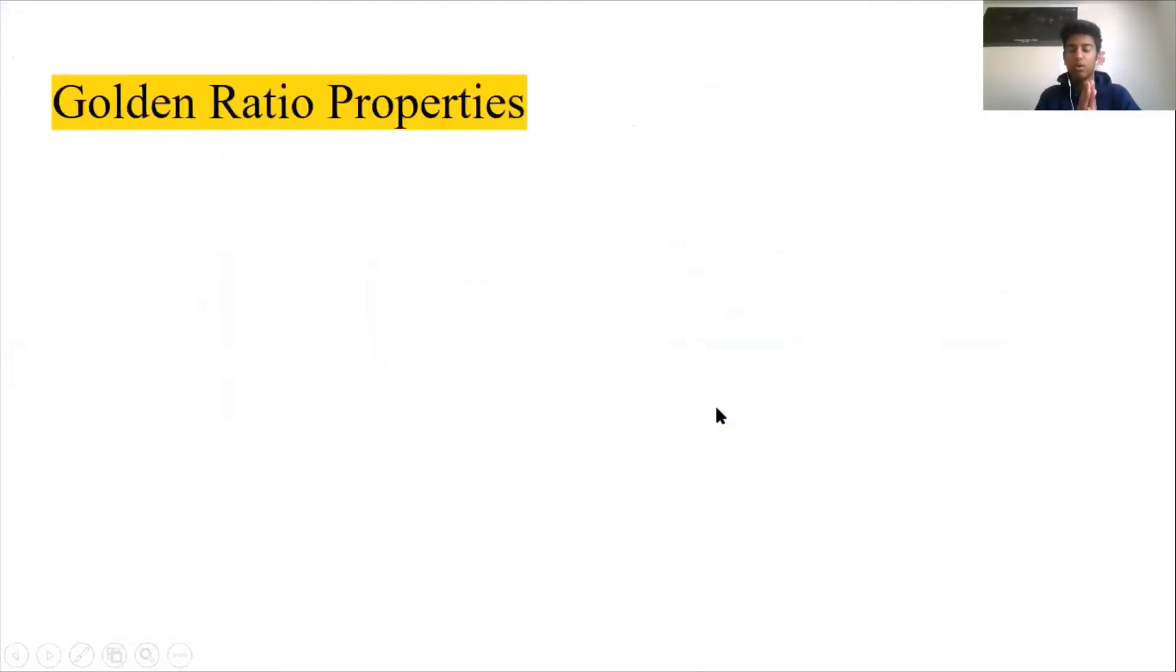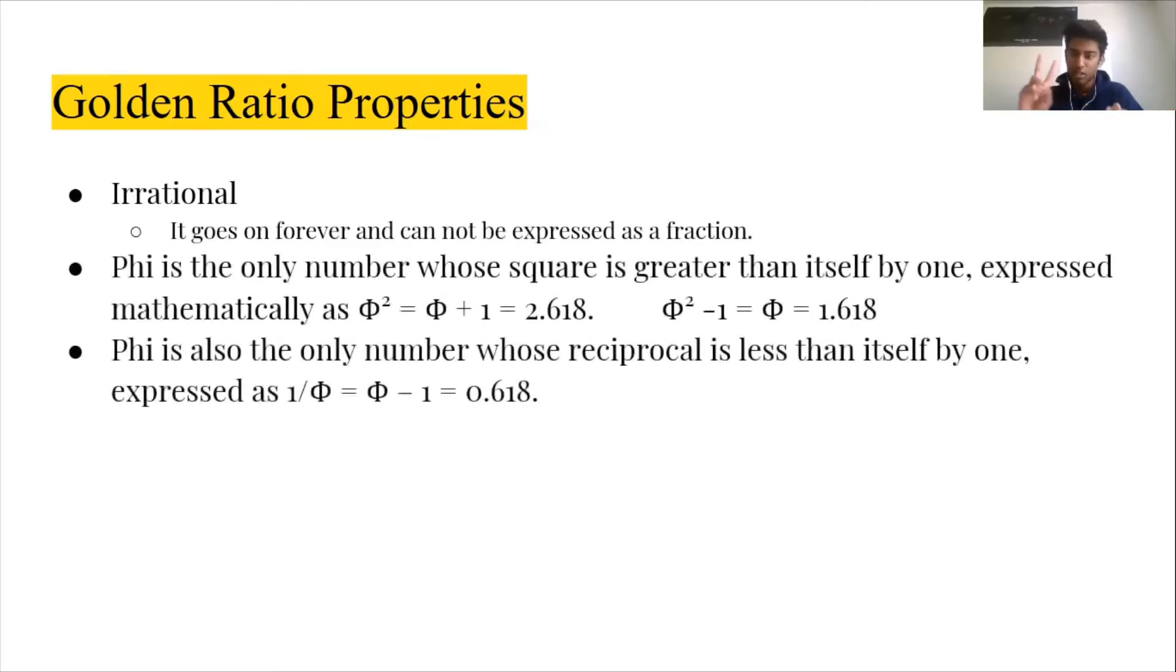So the golden ratio has certain properties. One of the properties is that it's irrational, meaning like pi, it has an infinite number of digits, and it can't be represented by a fraction. And it has two properties that are unique to just phi itself. One of these properties is that phi squared is equal to phi plus one. And also the other property that's unique to just phi is that one over phi, or the reciprocal of phi, is equal to phi minus one. And I encourage you to try this out with other numbers and see if other numbers work in this situation.